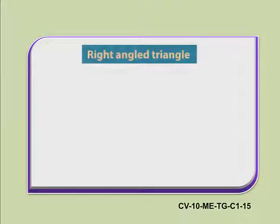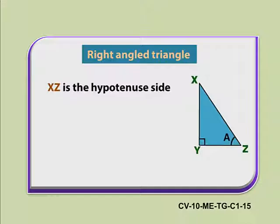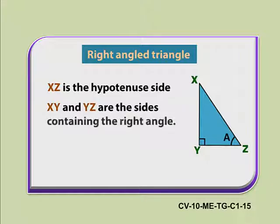Children, do you remember the names of sides of a right angle triangle and how to calculate their measures? Good. XZ is the Hypotenuse and the other two sides are XY and YZ which form the right angle.